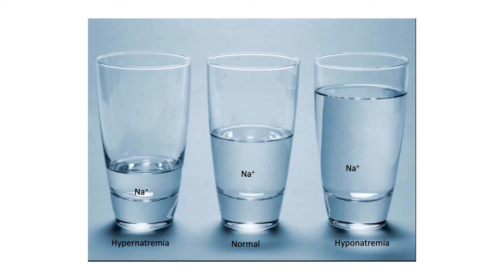In the glass on the far left, we have hypernatremia. Here, the amount of sodium is the same but we have less water — imagine that some of that water has evaporated. The sodium is the same but we have less water, like you have in dehydration from nausea, vomiting, or diarrhea. To summarize: hyponatremia means too much water; hypernatremia means less water. The amount of sodium really did not change. So hyponatremia and hypernatremia are disorders of water balance.